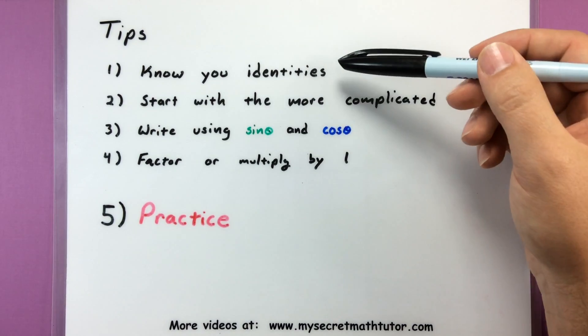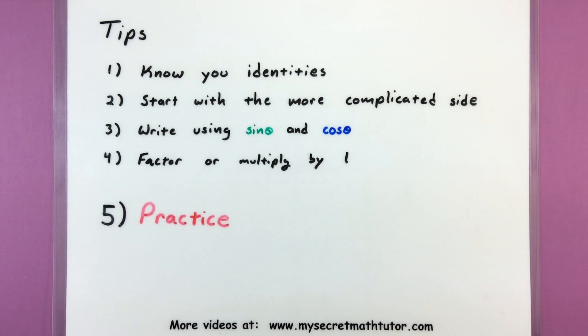One of the first tips is you really have to know all of your identities. There's lots of little connections that might take you from side A to side B and knowing those identities will make it a little bit easier to recognize maybe what you can swap out.